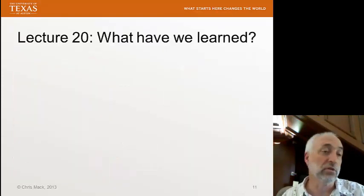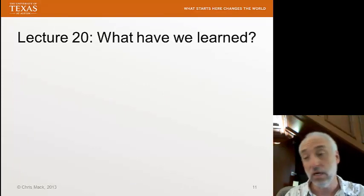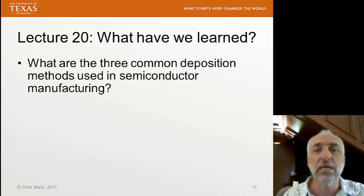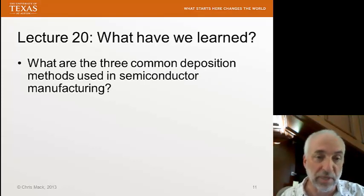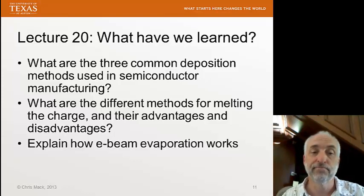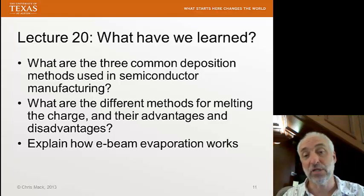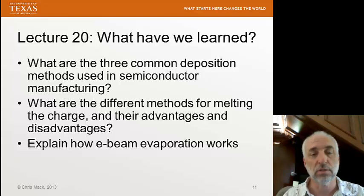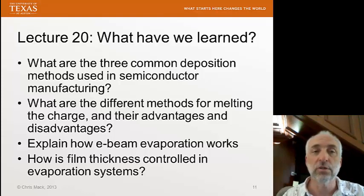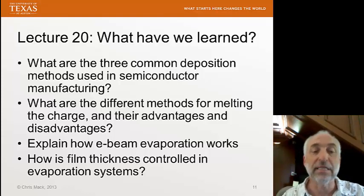Let's review what we've learned. You should be able to answer these questions: What are the three common deposition methods used in semiconductor manufacturing? What are the different methods for melting the charge in evaporation, and what are their advantages and disadvantages? Explain how E-beam evaporation works. And how is film thickness controlled in an evaporation system? Next time we'll finish our discussion of evaporation by talking about the mean free path and deposition rates.